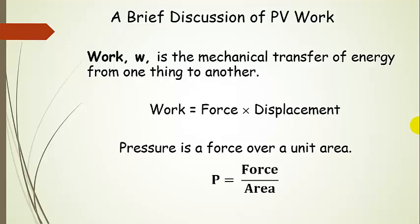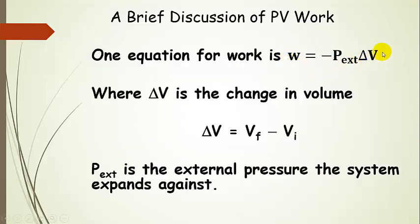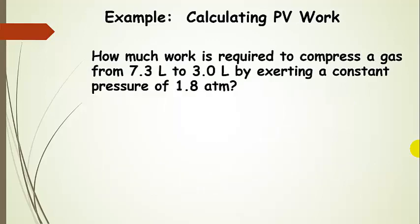Let's talk a little bit more about PV work — just one very specific kind. It's a mechanical transfer of energy from one thing to another. In general, work is defined as a force multiplied by some displacement, and pressure is a force over a unit area. Here's the equation for work — the only one we're going to use: work is equal to the negative external pressure multiplied by delta V, which is the change in volume of that system. The external pressure is the pressure that the system expands against.